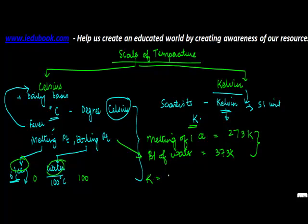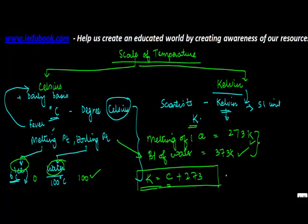So we say that Kelvin temperature is equal to Celsius plus 273. If you notice: if it was 0°C, that's 0 plus 273, which gives 273 K. If it was 100°C, that's 100 plus 273, giving 373 K. By using this formula, you can calculate that if there is a particular temperature in degree Celsius, what will be the corresponding Kelvin reading.